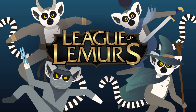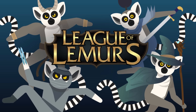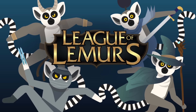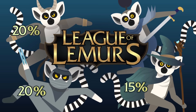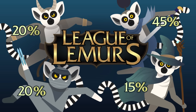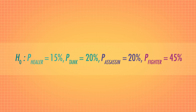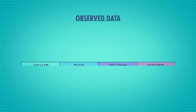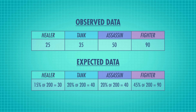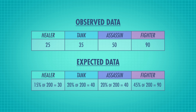A new video game has come out called League of Lemurs, and it has taken the world by storm. It has hundreds of unique characters you can play as four main types: healers, tanks, assassins, and fighters. The official development team says on average they see 15% of players choosing healers, 20% choosing tanks, 20% choosing assassins, and 45% choosing fighters. But you wonder whether that distribution holds in the top ranks of players. The null hypothesis is that the percentages LOL gave you are correct; the alternative is that at least one is incorrect. So you record 20 games with 10 players each. According to the developers' numbers, you'd expect 30 healers, 40 tanks, 40 assassins, and 90 fighters — but these aren't exactly what we observed, so we have to ask whether they're different enough to be statistically significant.